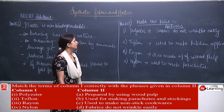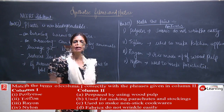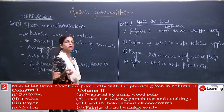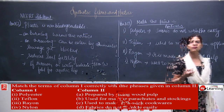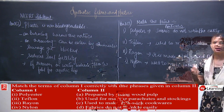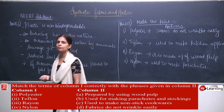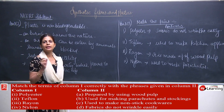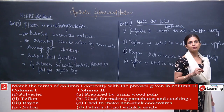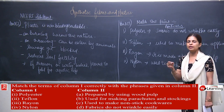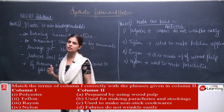To explain: polyester does not get wrinkles and can be worn without ironing; it also does not absorb water. Teflon is used to make various non-stick utensils used in the kitchen. Rayon is a semi-synthetic material made from wood pulp. Nylon is a very strong fiber used for climbing ropes, parachutes, and stockings.